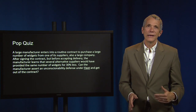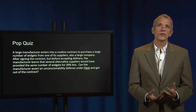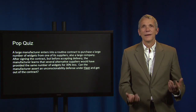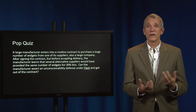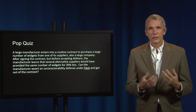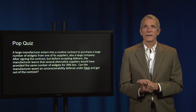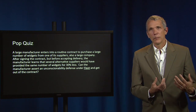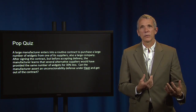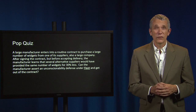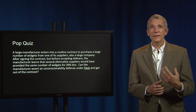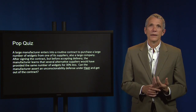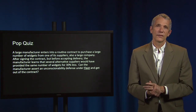No. Even assuming that the manufacturer could show the price was unfair, this hypothetical is missing the element of procedural unconscionability — it's missing evidence that there was a defect in the process. The contracts in Fleet were between a professional seller exploiting vulnerable consumers. The manufacturer in this example is a large, sophisticated company engaged in routine business transactions.